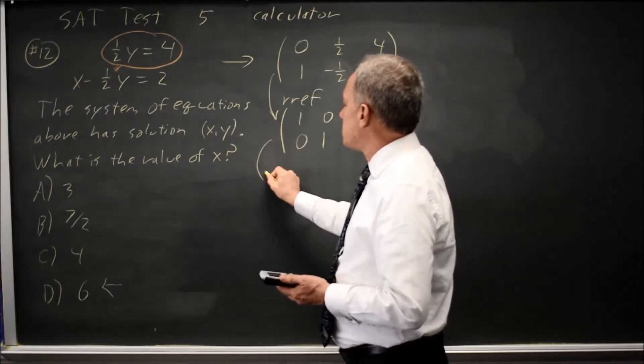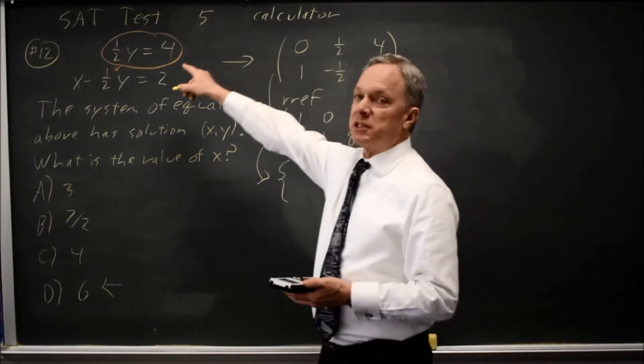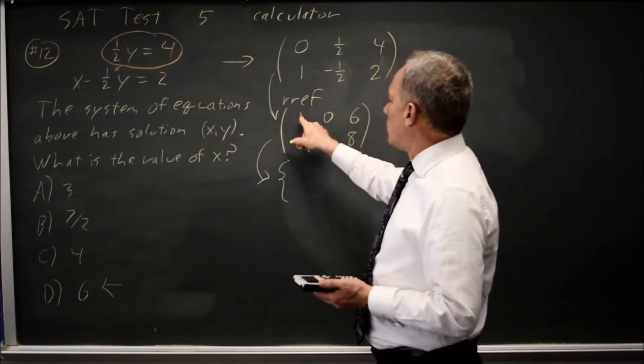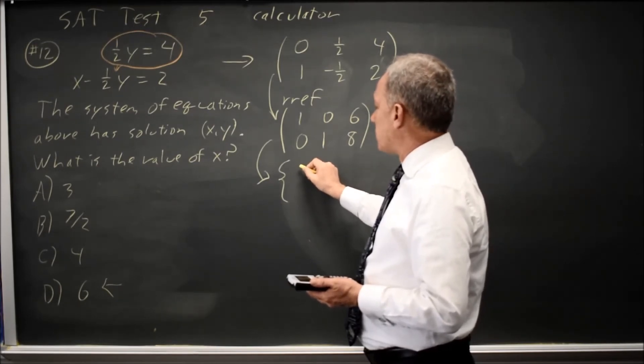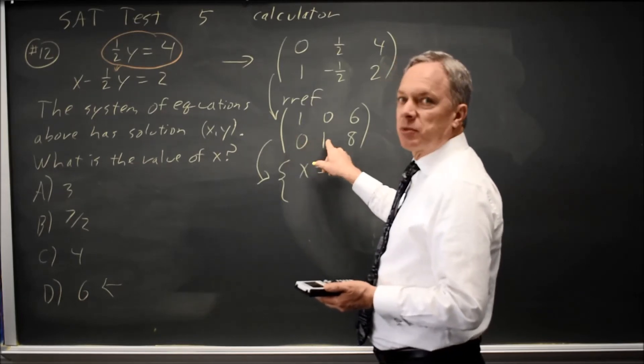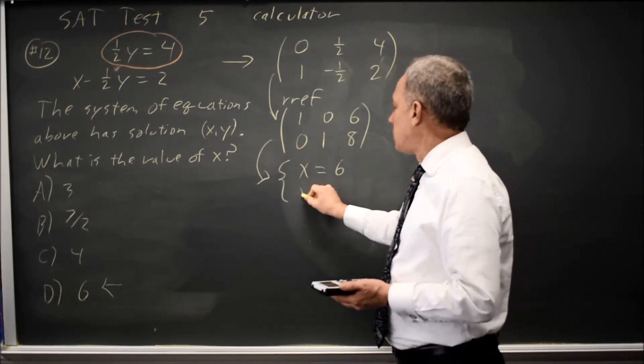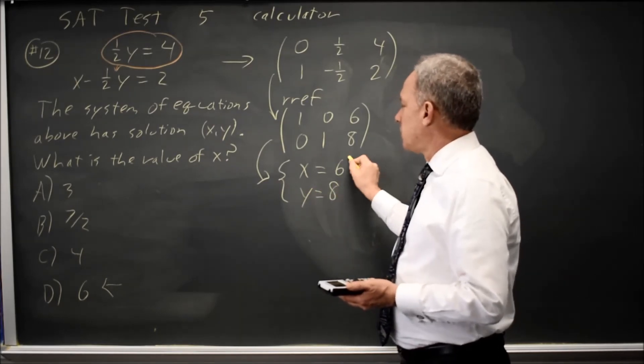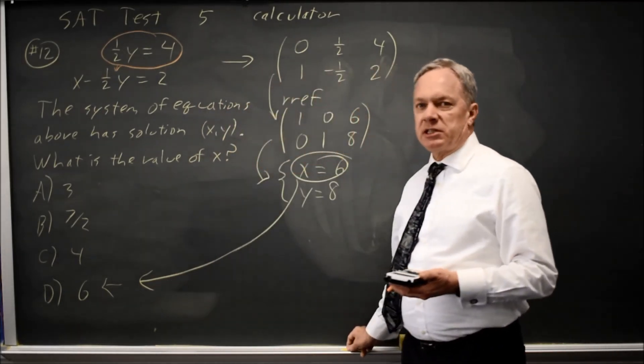If I convert this matrix back to a system of equations, undoing what I did here, 1x plus 0y equals 6. 1x plus 0y is 1x, which is just x, equals 6. 0x plus 1y equals 8. 0x plus 1y is just y, equals 8. They're asking for the x value, so again, the correct answer would be 6.